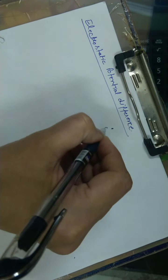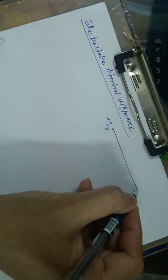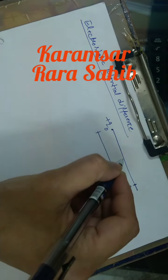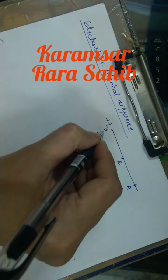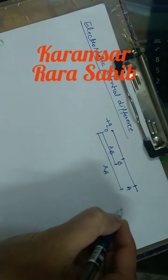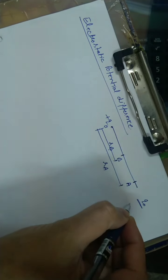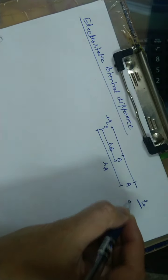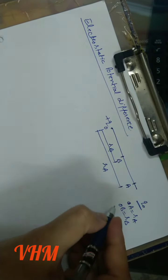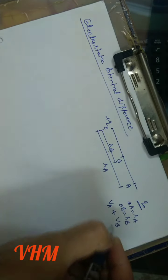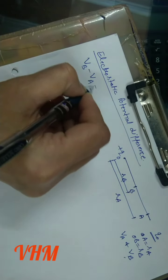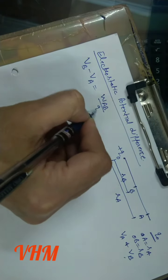Let we have a point charge at O. Here we have point A at distance R_A, and point B at distance R_B. Now we have to move the test charge Q₀ from point A at distance R_A to point B at distance R_B. According to the definition, potential difference is work done per unit test charge.